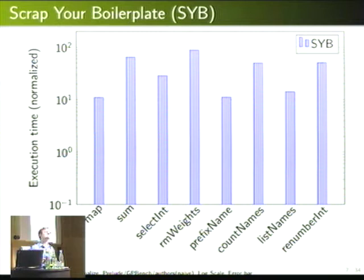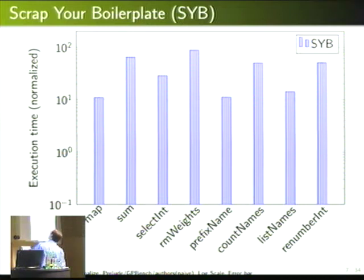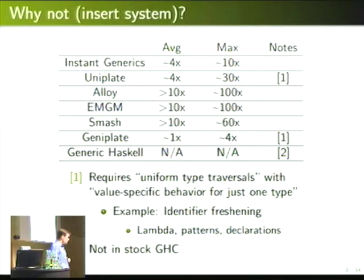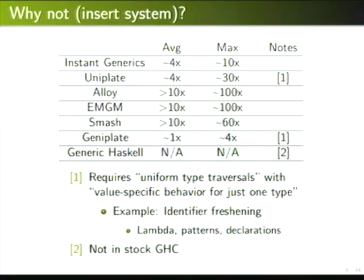The error bars, which you can't really see because they're so tiny, are one standard deviation. Scrap Your Boilerplate is slow. We tried a few other systems — we got four times slower than handwritten code. But even with instant generics or uniplate, there are bad cases where performance can really blow up.